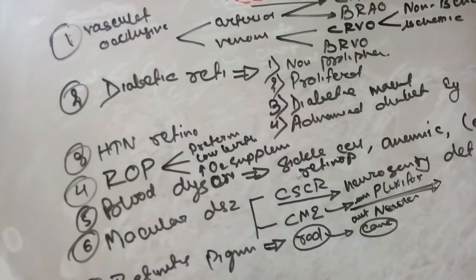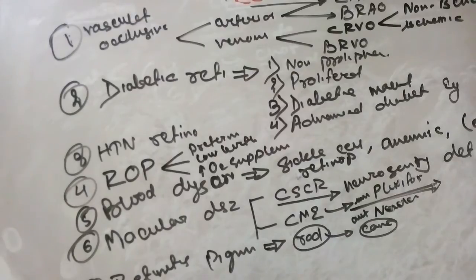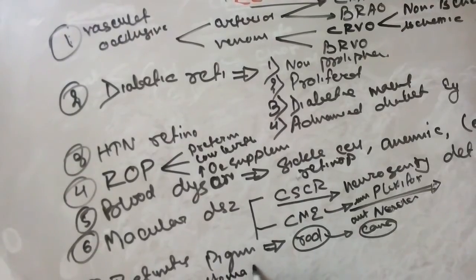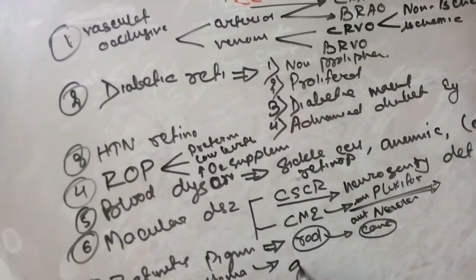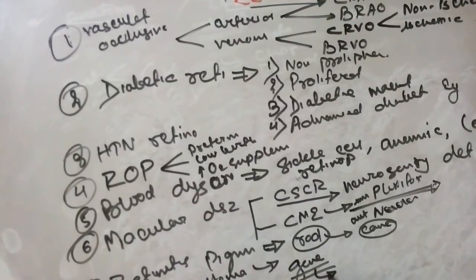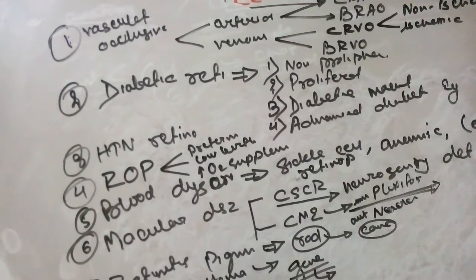We will also study about retinoblastoma — a tumor of the retina. This is the common type of tumor in the retina. The RB gene is usually responsible for tumor suppression, and if there is any abnormality in this gene, it causes retinoblastoma.